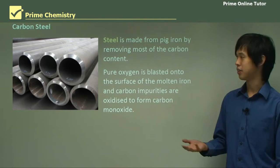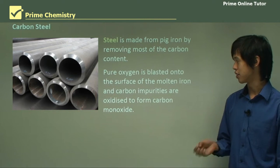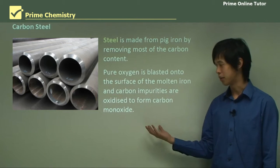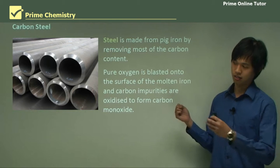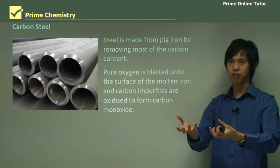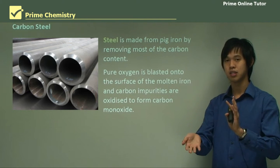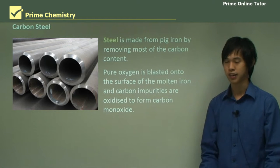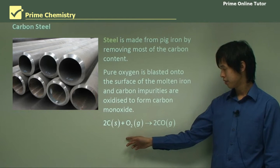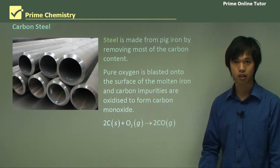To remove the carbon from pig iron, we blast pure oxygen to the surface of molten iron. The carbon impurities then oxidize to form carbon monoxide. So you blast pure oxygen into the molten steel, it reacts with the carbon, and you form carbon monoxide, removing the carbon from the pig iron. The reaction is: 2C + O₂ → 2CO.